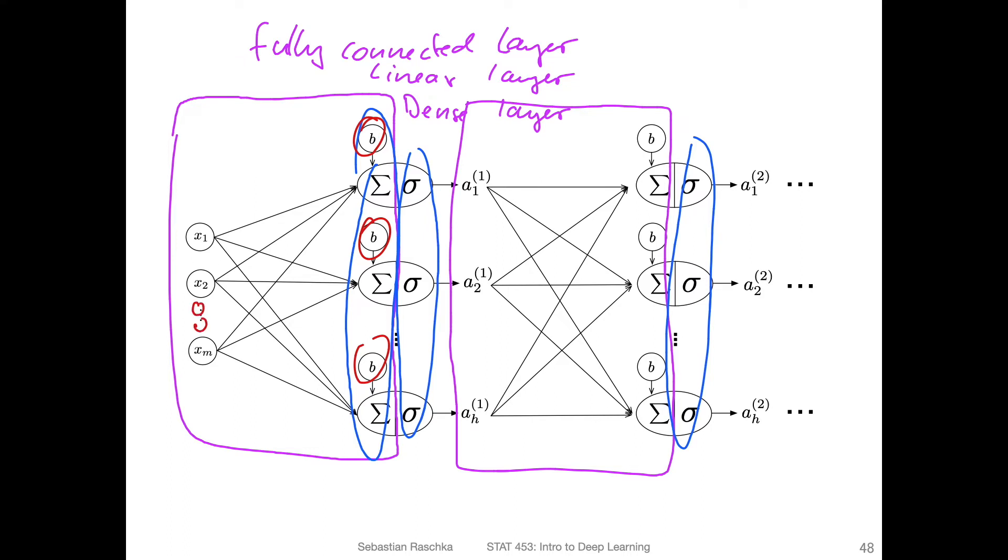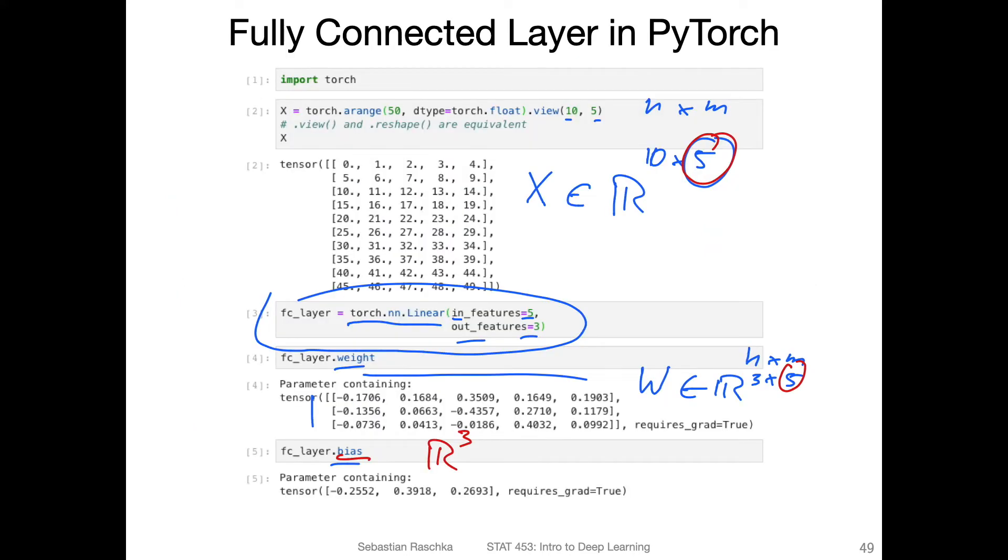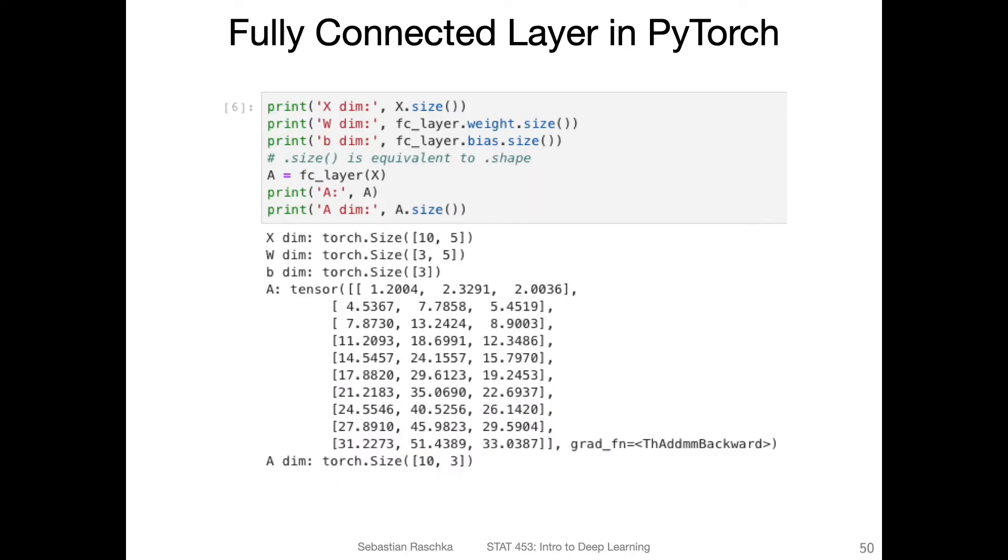Each output has a bias unit attached to it. Here, we would have five inputs in the next slide example, and three outputs. Notice here, these are also small random values. We will talk about it later why it's useful to have random values here instead of all zeros.